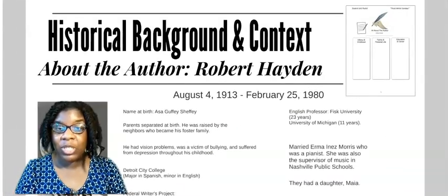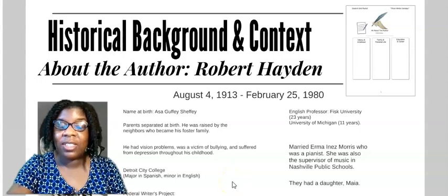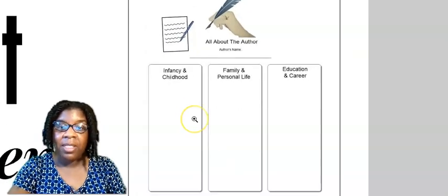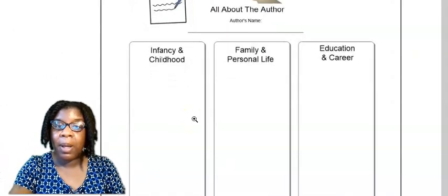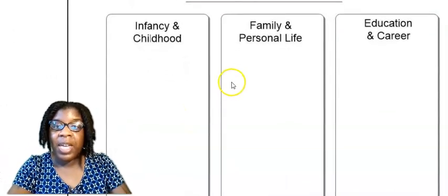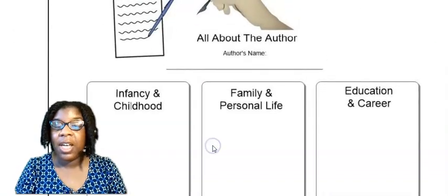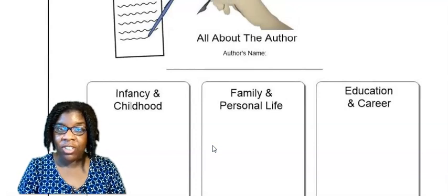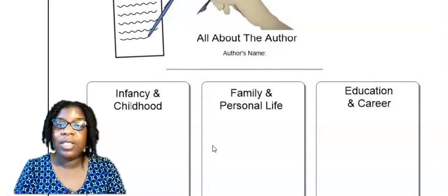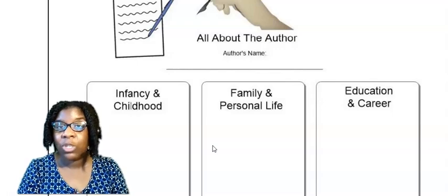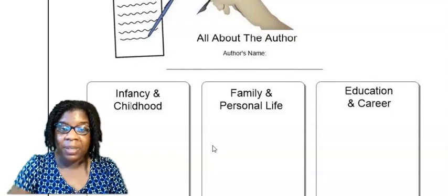Let's get into some historical background and context. Turn to your next graphic organizer in the student unit packet. This one says about the author. It has three columns: infancy and childhood, family and personal life, and education and career. While I review details regarding the author's life, you are going to write at least one fact in each of those columns.